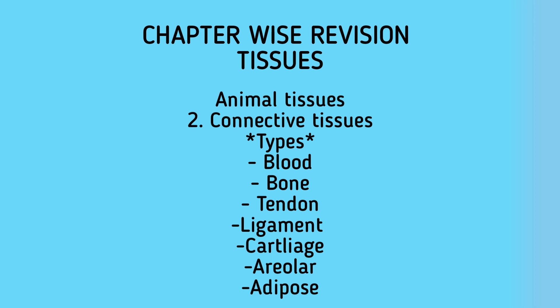Cartilage smoothens the bone surface at joints and is present in the nose, ear, trachea, and larynx. The sixth connective tissue is areolar tissue, found between skin and muscles, around blood vessels and nerves, and in bone marrow. It fills space inside organs, supports internal organs, and repairs tissues. The seventh is adipose tissue — fat-storing tissue found below the skin and between internal organs.